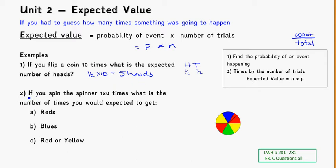So if we take a look at another example, if we spin the spinner over here 120 times, what is going to be the number of times you'd expect to get red, blue, or red and yellow? So I need to figure out here my probabilities. First thing I need to know is my total number of possibilities.